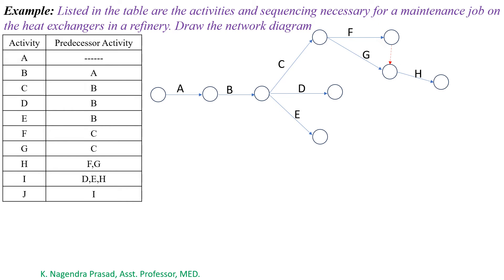Next, observe activity I. For activity I, D, E, and H are the predecessor activities, which means after completion of D, E, and H, activity I will start. So draw activity I.